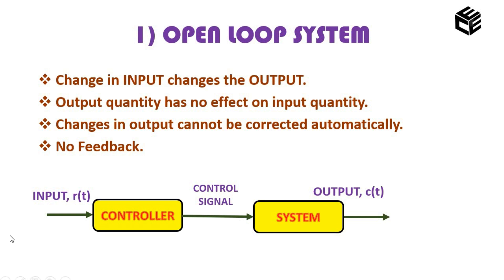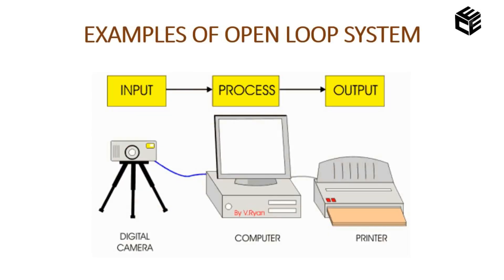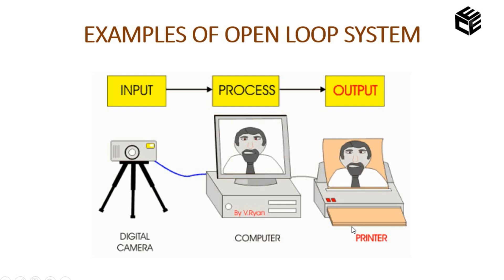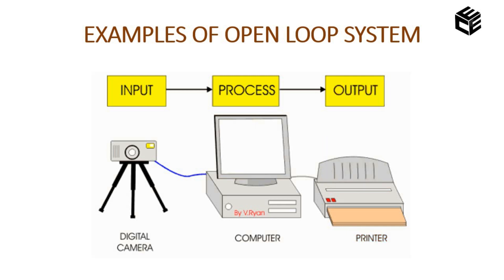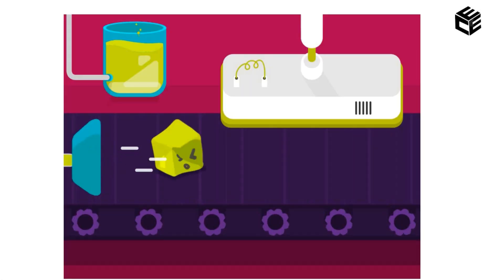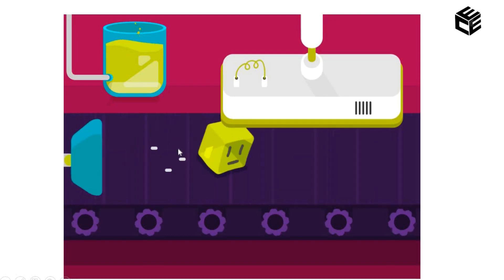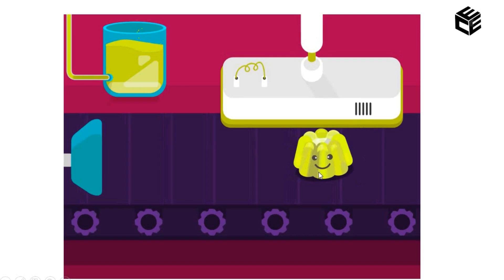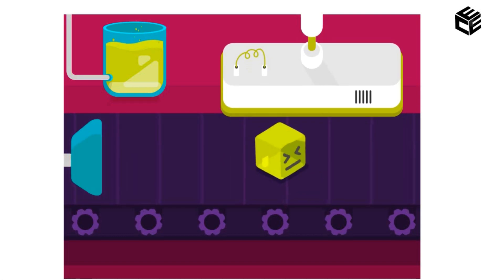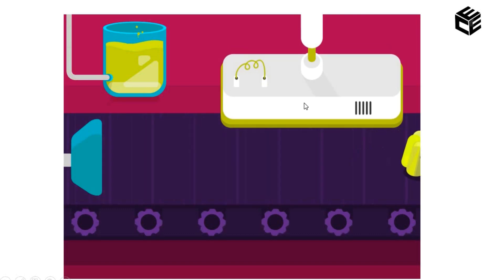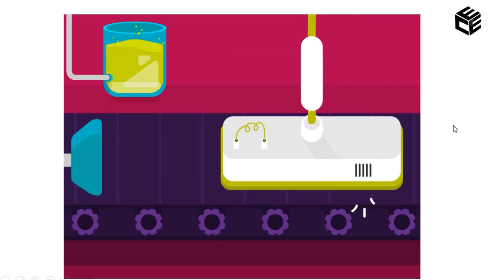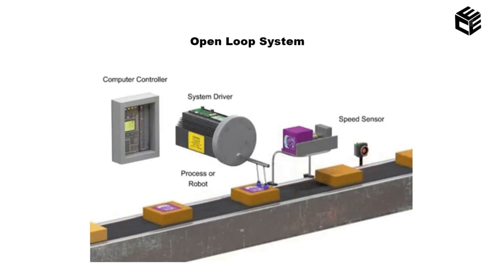In the open loop system, there is no feedback — just giving the input and getting back the output. For example, a camera takes a picture, the picture is forwarded to a computer, and from the computer you take a printout with the help of a printer. That is an open loop system. Another example: how a jelly is prepared — a jelly is blown from a blower and made into a specific shape with the help of a shaping machine and you get the output. You give an input, you get an output with the help of a processing unit.